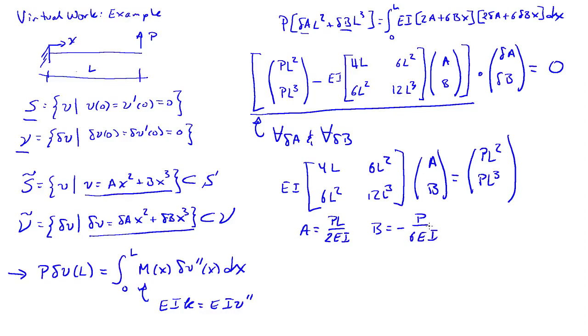And so I get a final result of V of X is equal to PL squared over, sorry, 2 EI. Minus PX cubed over 6 EI. So that is my two term approximate virtual work expression for this problem.